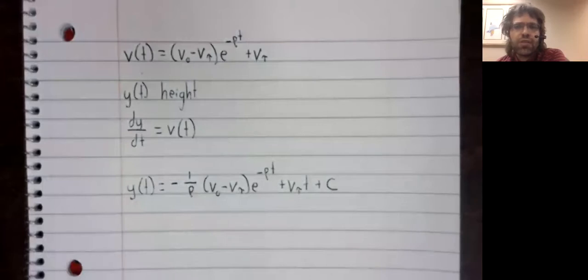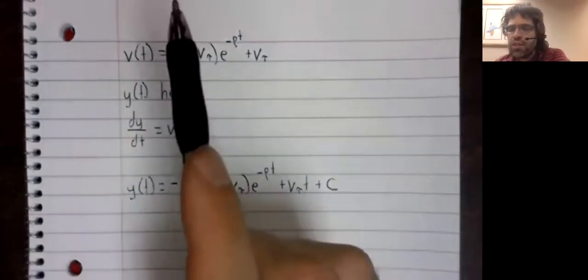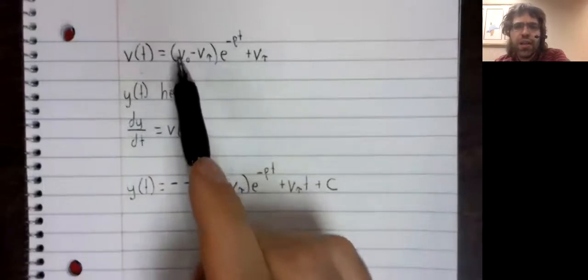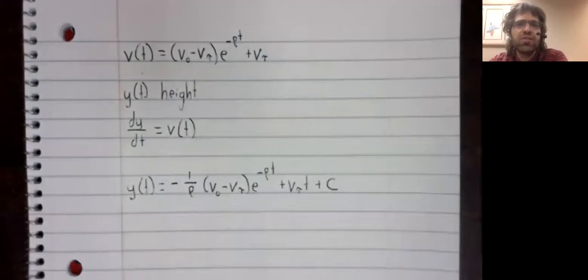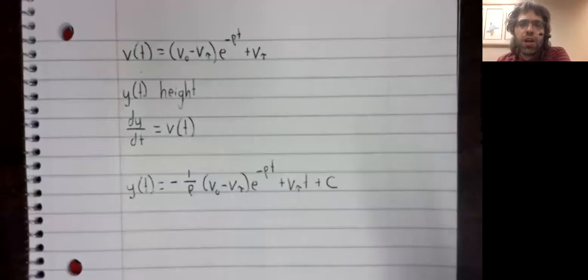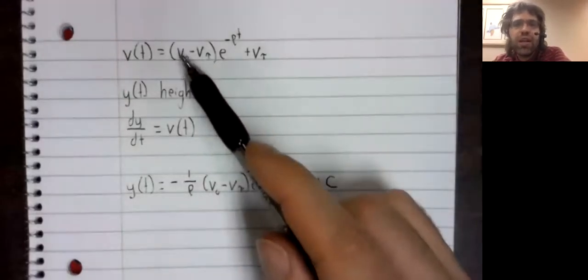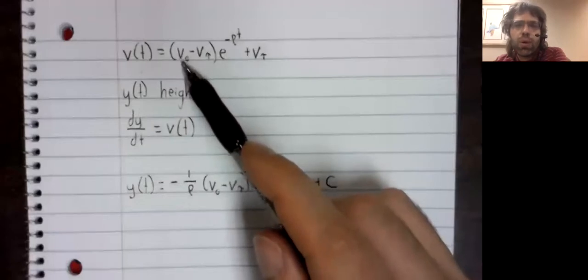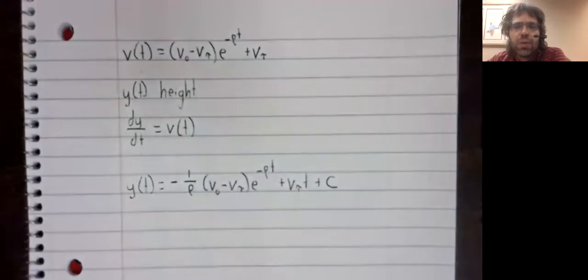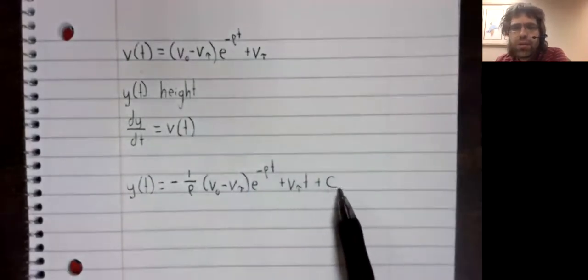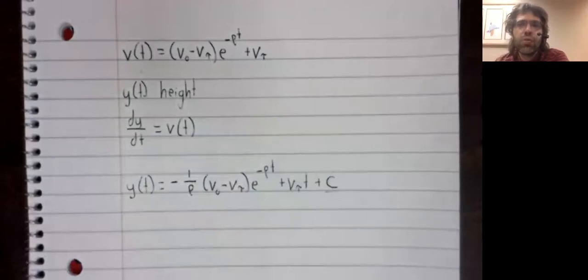If you remember in the previous video, we found the velocity. And when we found the velocity function, it didn't have the initial velocity. It had some arbitrary constant C. And we rewrote it so that our constant was replaced with something that has a clear real world meaning. We'll now do the same. We'll get rid of this C. And in its place, we'll see the initial height y sub zero. And the exact way of doing this is not totally straightforward.